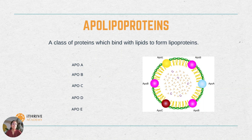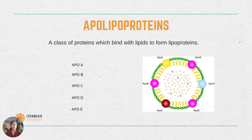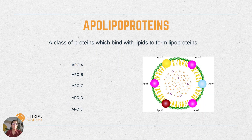ApoB is the major apoprotein of LDL, but also comprises about 35% of VLDL protein. There are 2 forms of ApoB: a large form called ApoB100, found in LDL, and a smaller form called ApoB48, which is produced mainly in the intestine. ApoC represents a group of apoproteins — mainly ApoC1, ApoC2, and ApoC3 — which are major components of VLDL but also present as minor components in HDL. ApoD is a minor component also found in HDL. ApoE is a major component of VLDL and a minor one of HDL.